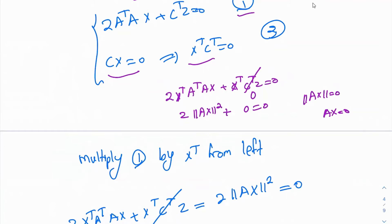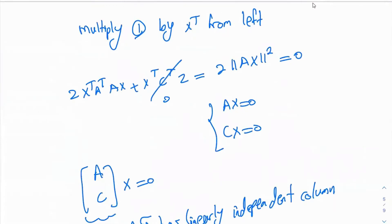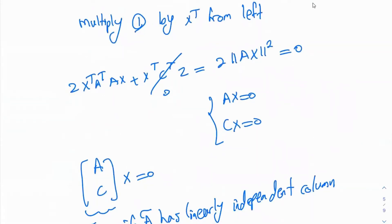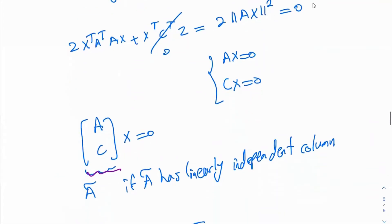So AX is 0 and CX is 0. We can look at this derivation. Therefore, the stacked matrix of A and C times x — call it A-tilde — equals 0. So x equal to 0 is going to be the only solution if this stacked matrix has linearly independent columns.